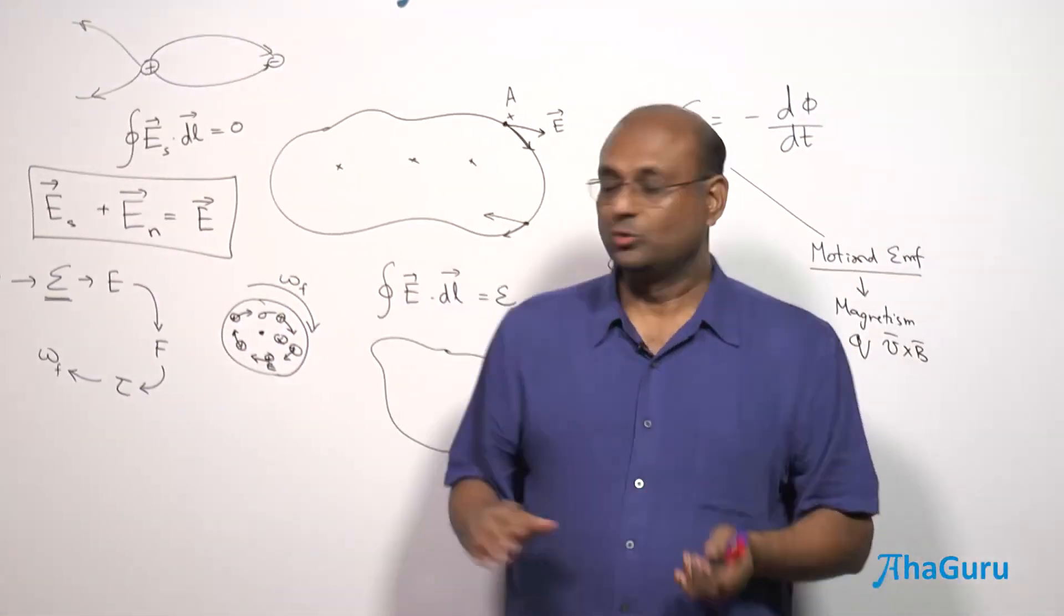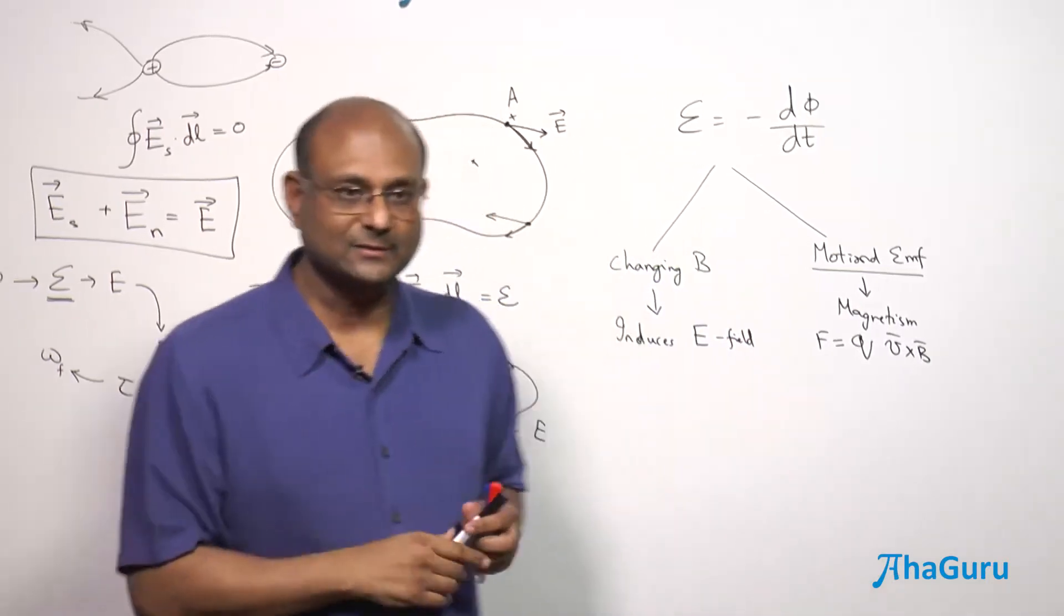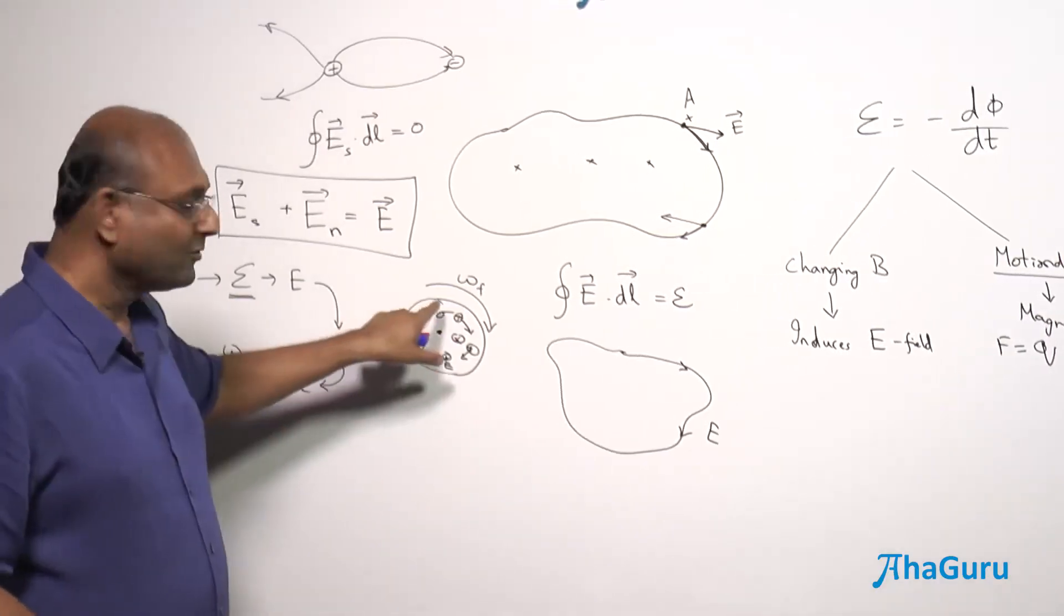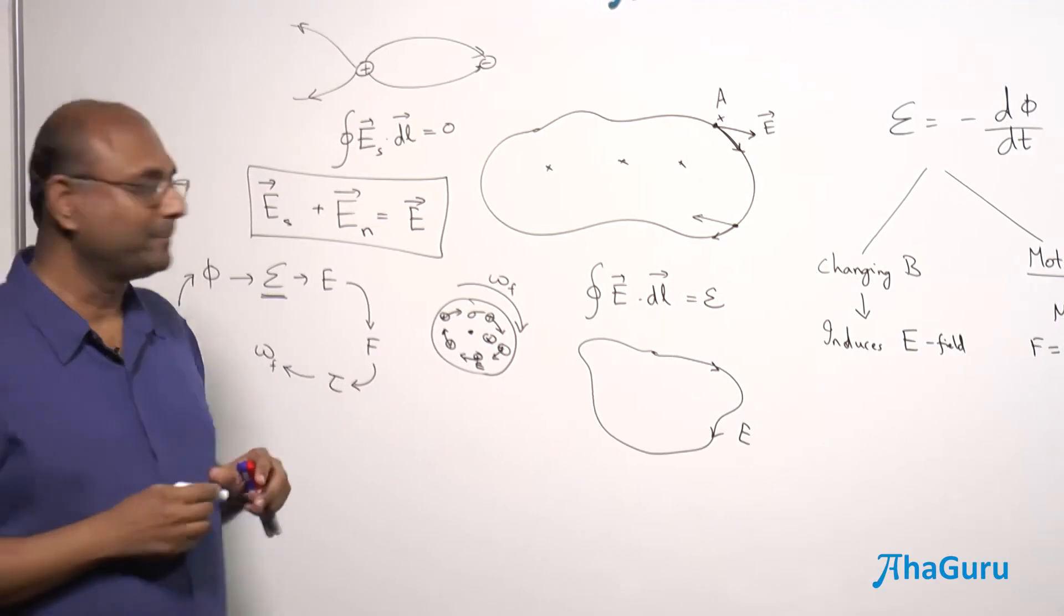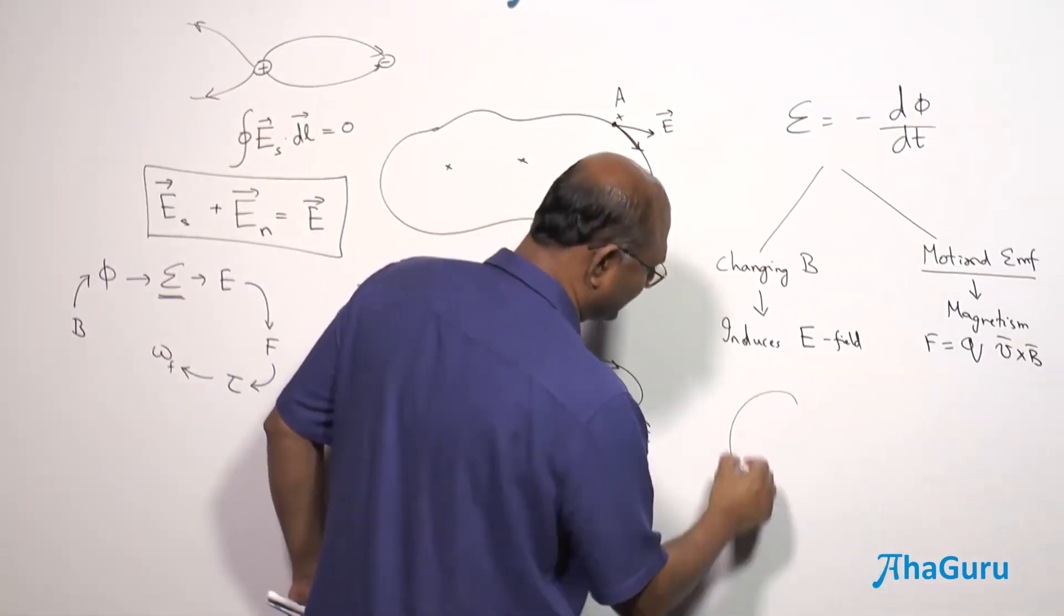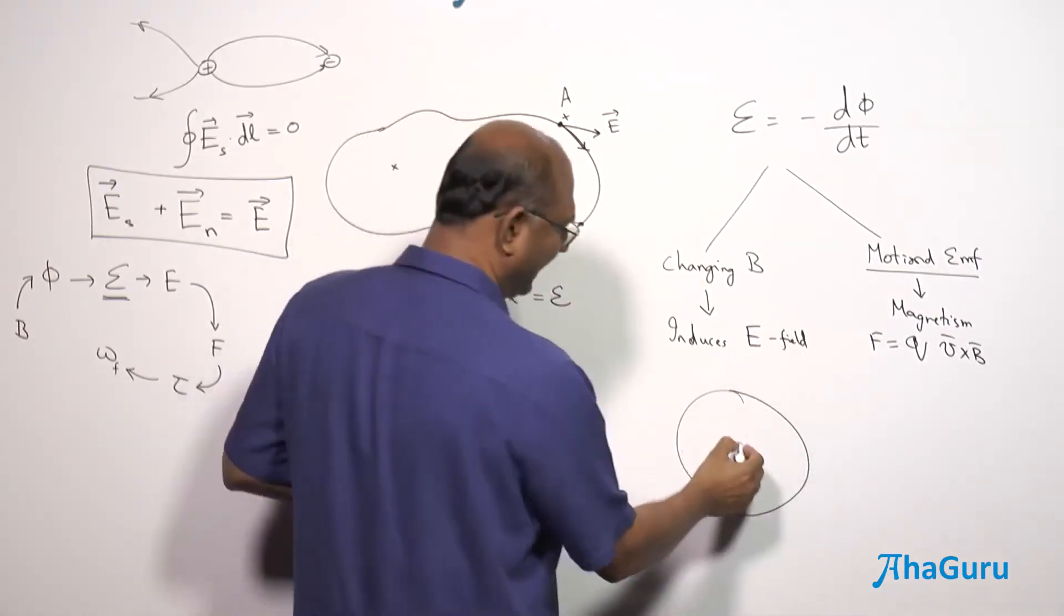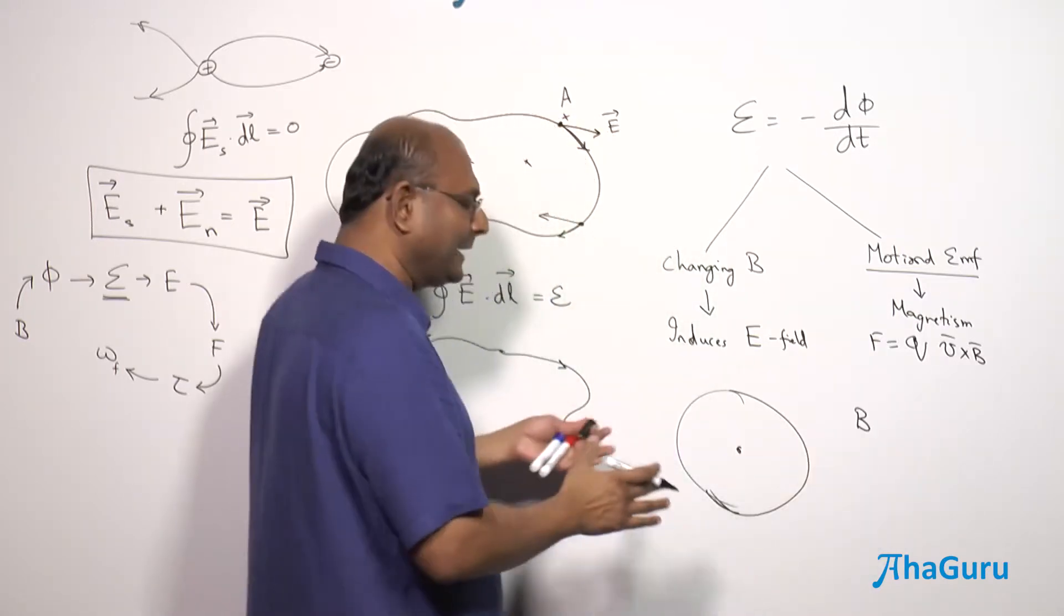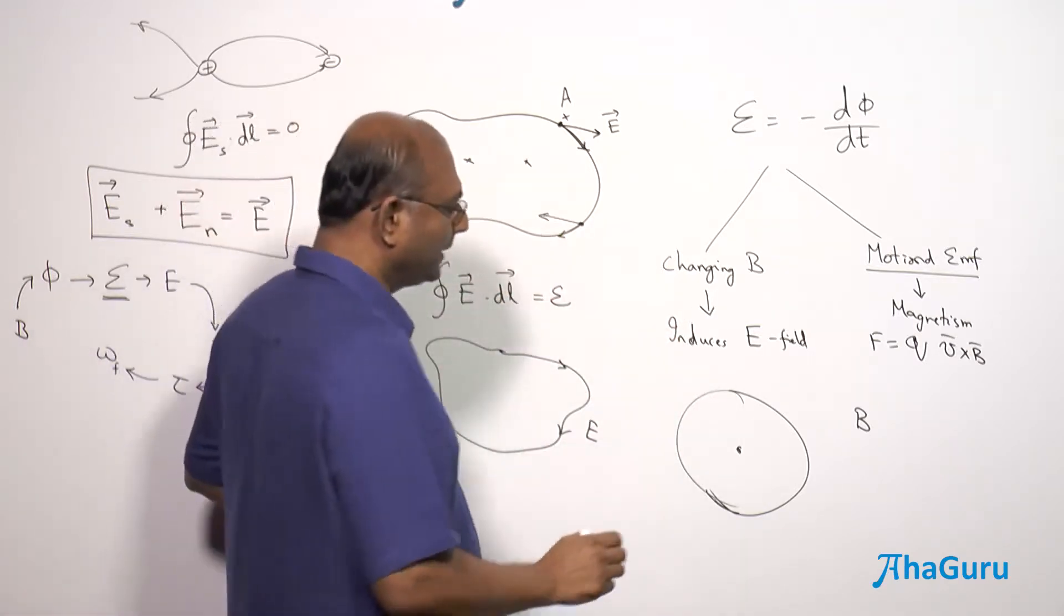Let us think about some one case at least, where we can calculate it and see. Now, it is very difficult to do this for all possible questions. But we can do this for some of the cases. In fact, we will only do it for one kind of case. And the case is, when the B field is symmetrically distributed. So, imagine the case where B was symmetrically distributed. Let us say it was inside a loop like this. Everywhere. I have a magnetic field B.